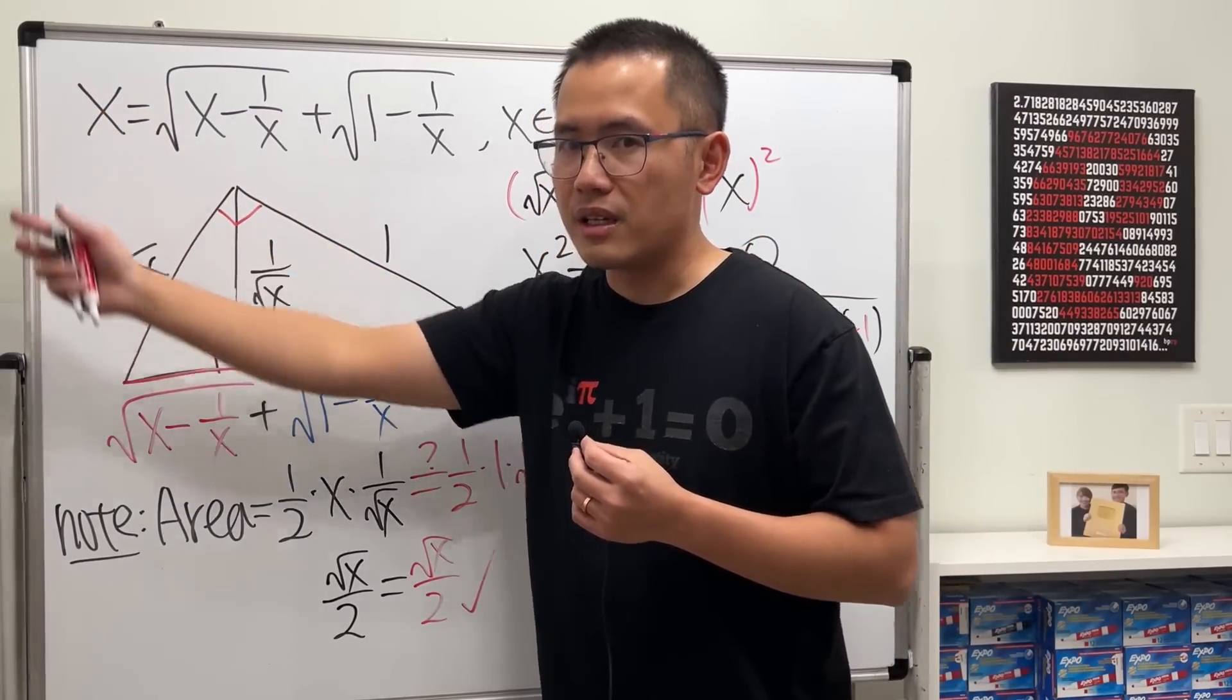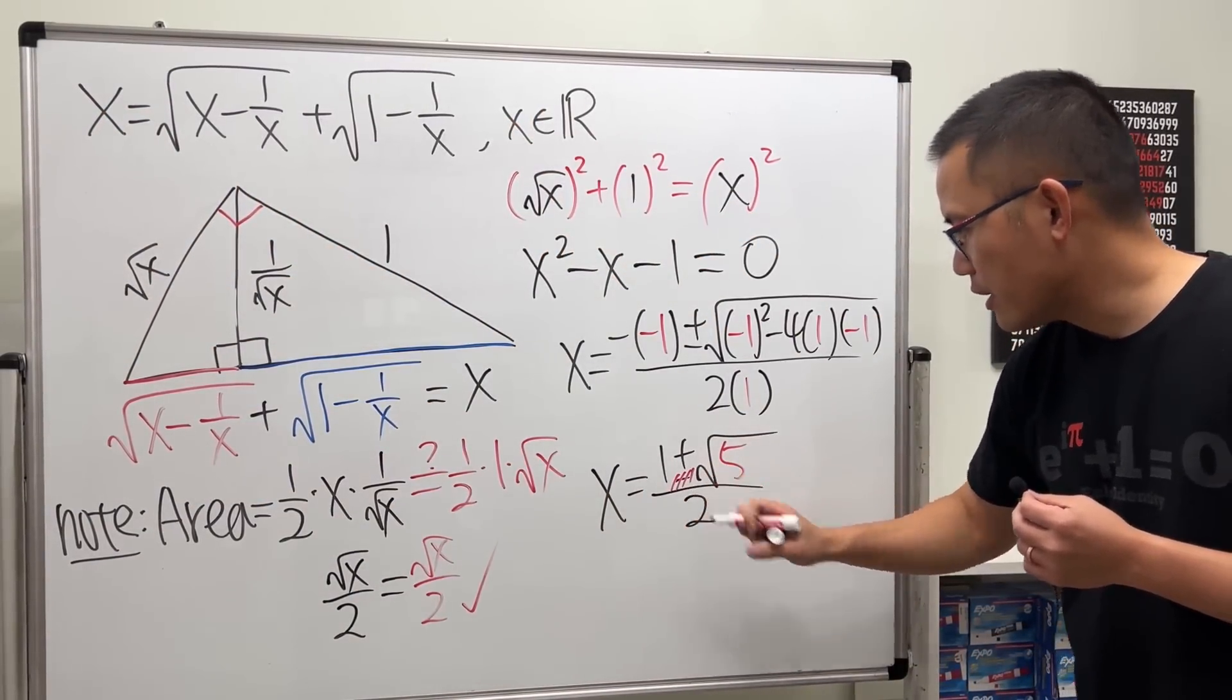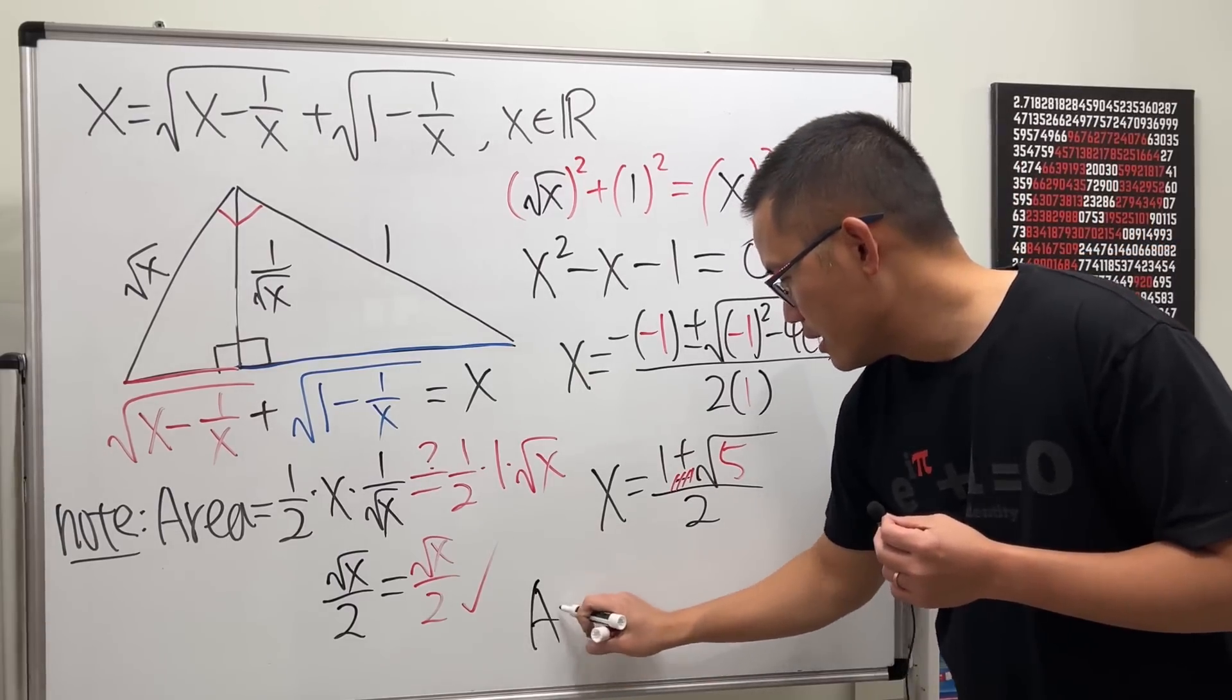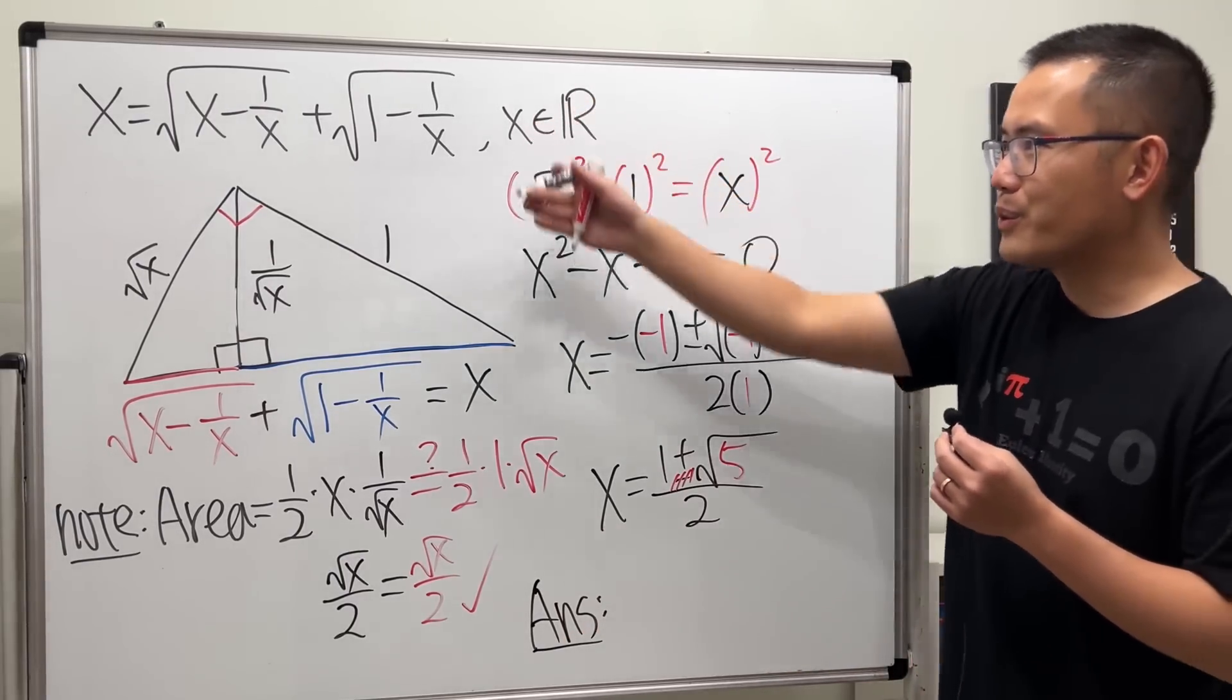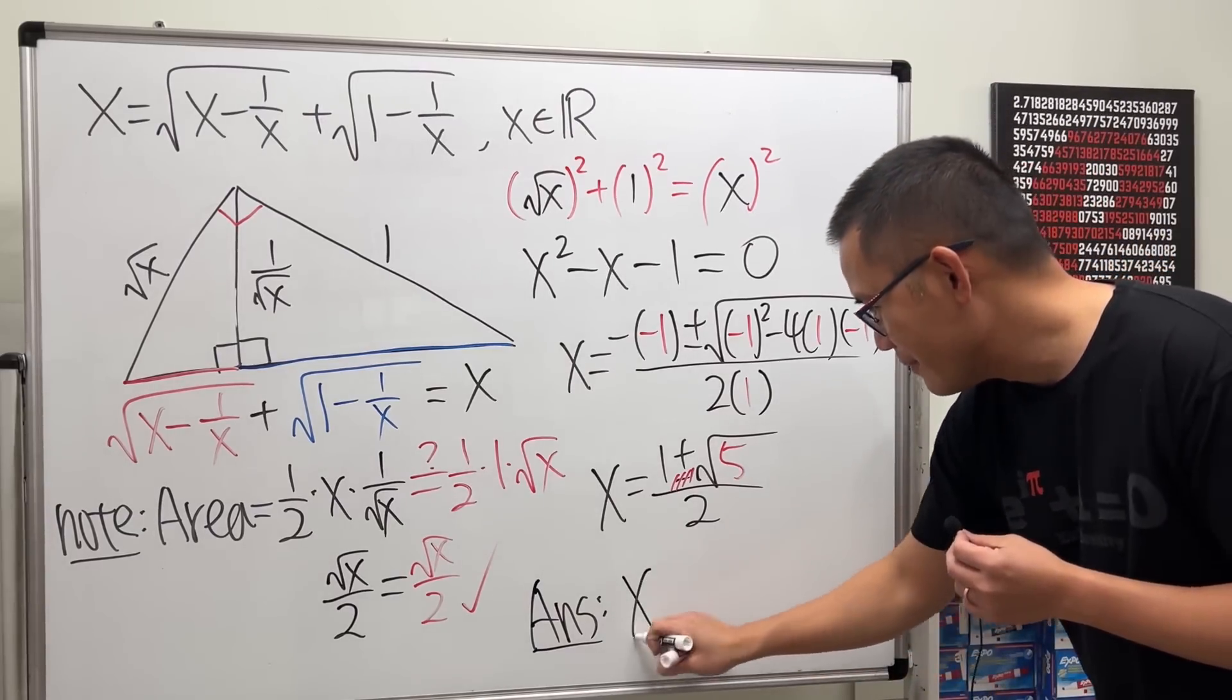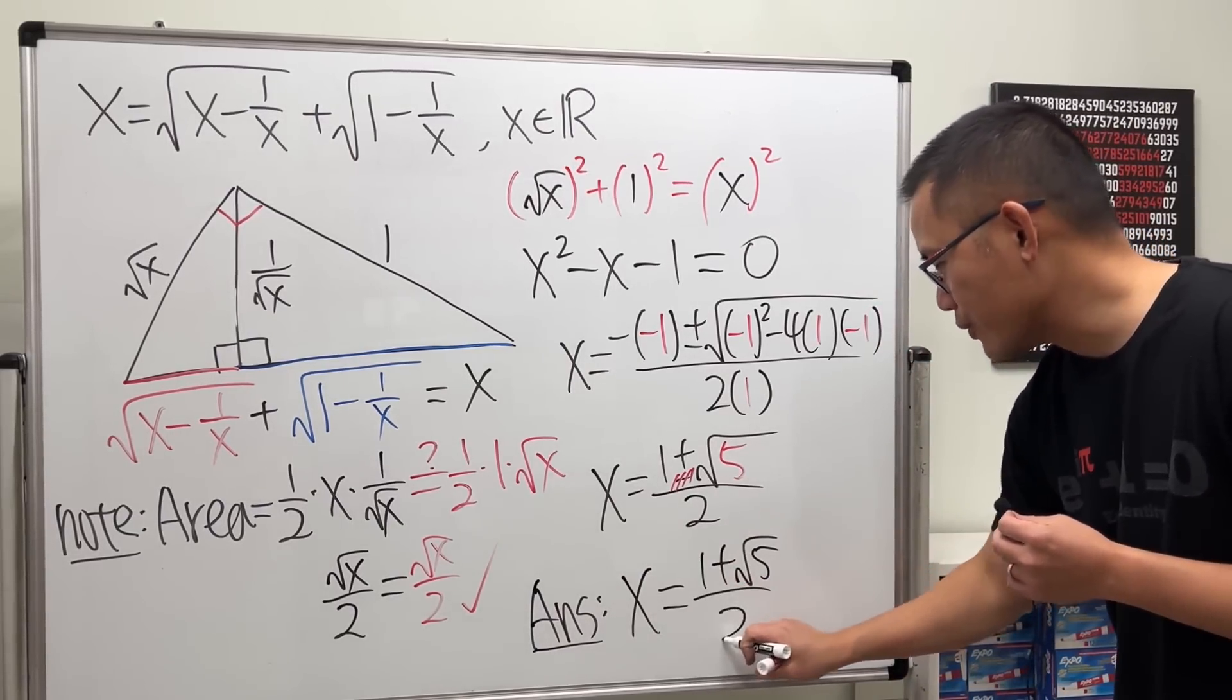We don't want the left hand side to be negative, right? Because that's x. So we will have to get rid of the negative here. The only answer is indeed the golden ratio, which is very cool for this equation: x equals (1 + √5)/2.